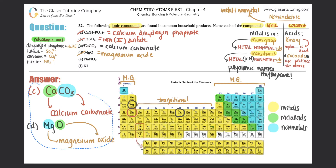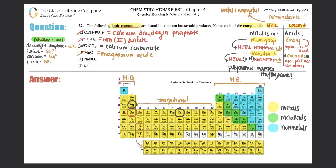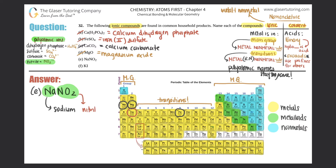Compound E: NaNO₂. Sodium is a main group metal, so I just state the metal: sodium. Then I have nitrogen with two oxygens — recognizing polyatomic ions, nitrite is NO₂ with a minus one charge. No Roman numeral because sodium is not a transition metal. Compound E is sodium nitrite.